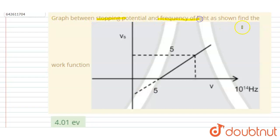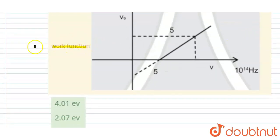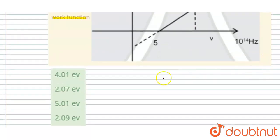You have to find out the work function. So if you see the relation between stopping potential and frequency, then e times stopping potential is equals to hf minus work function.